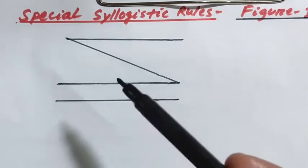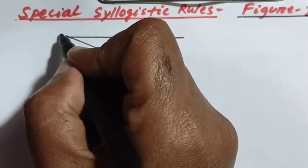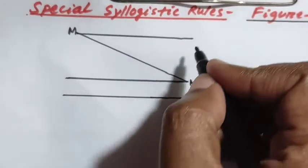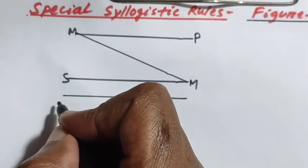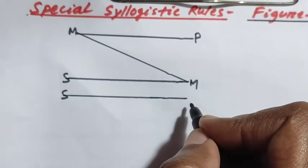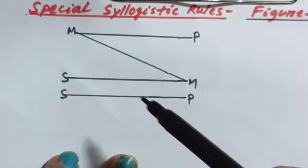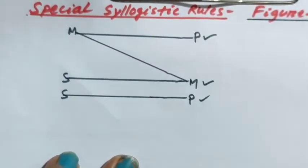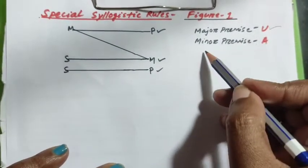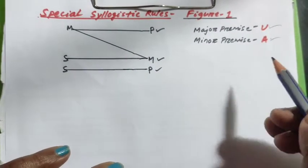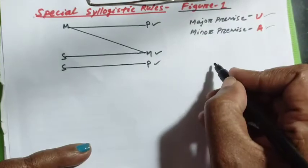I draw Figure 1 here. In Figure 1, M is the middle term in the predicate place of the major premise. P is the major term and S is the minor term. This is the major premise, this is the minor premise, and this is the conclusion. According to the rules, the major premise must be universal and the minor premise must be affirmative.